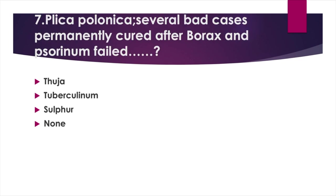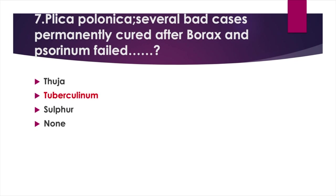Plica polonica — several bad cases permanently cured after Borax and Psorinum failed: Option A. Thuja. Option B. Tuberculinum. Option C. Sulphur. Option D. None of these. Answer: Option B. Tuberculinum.